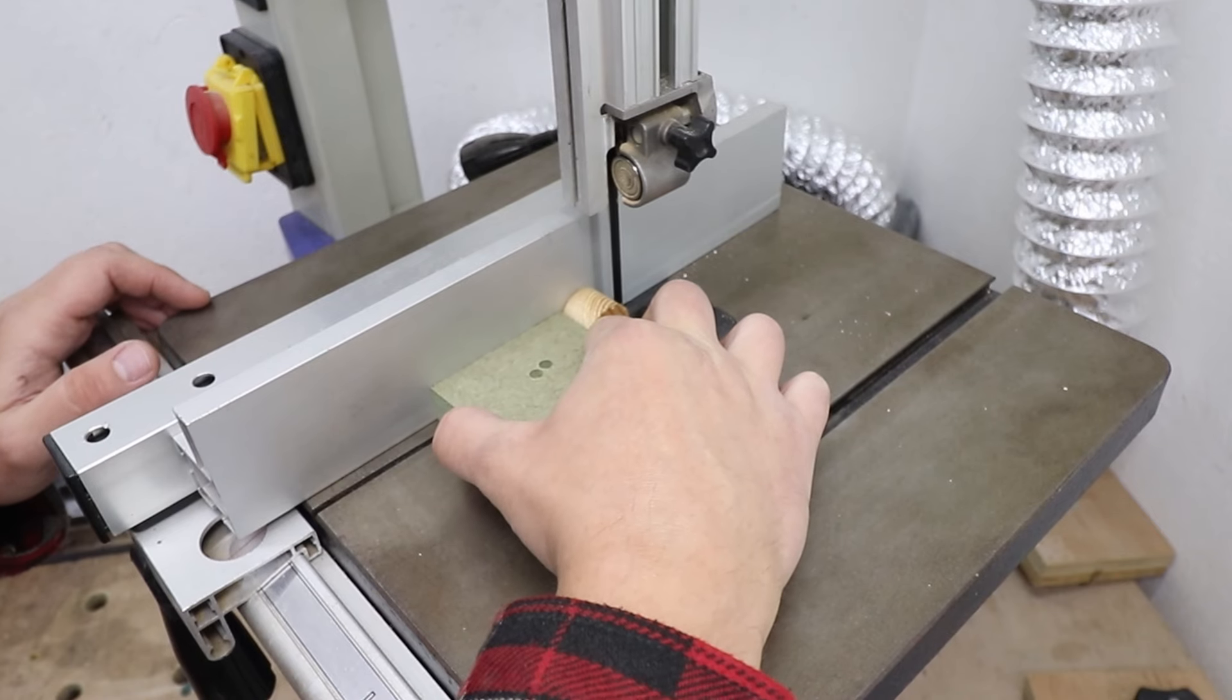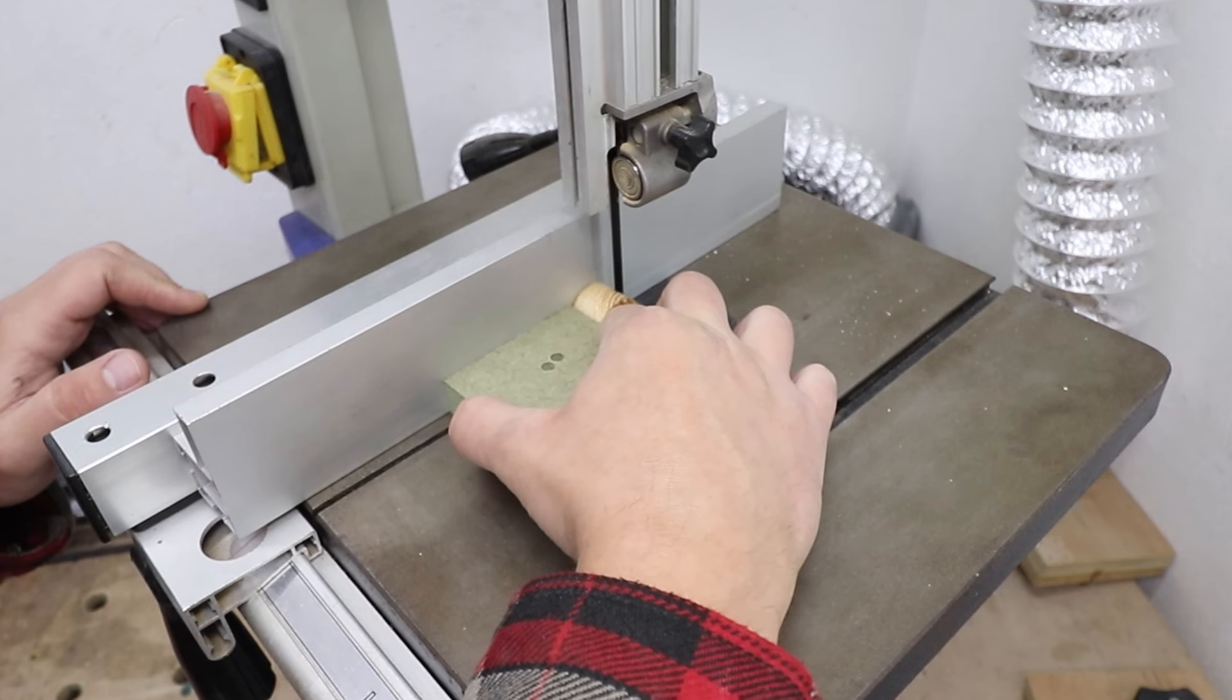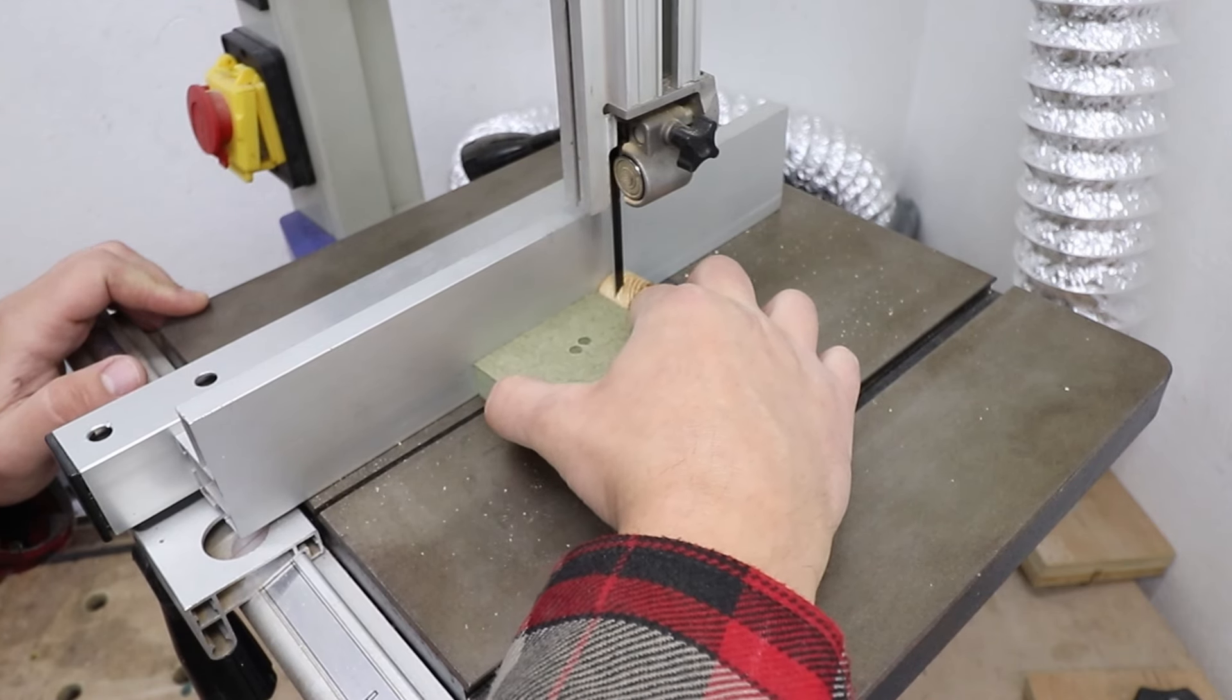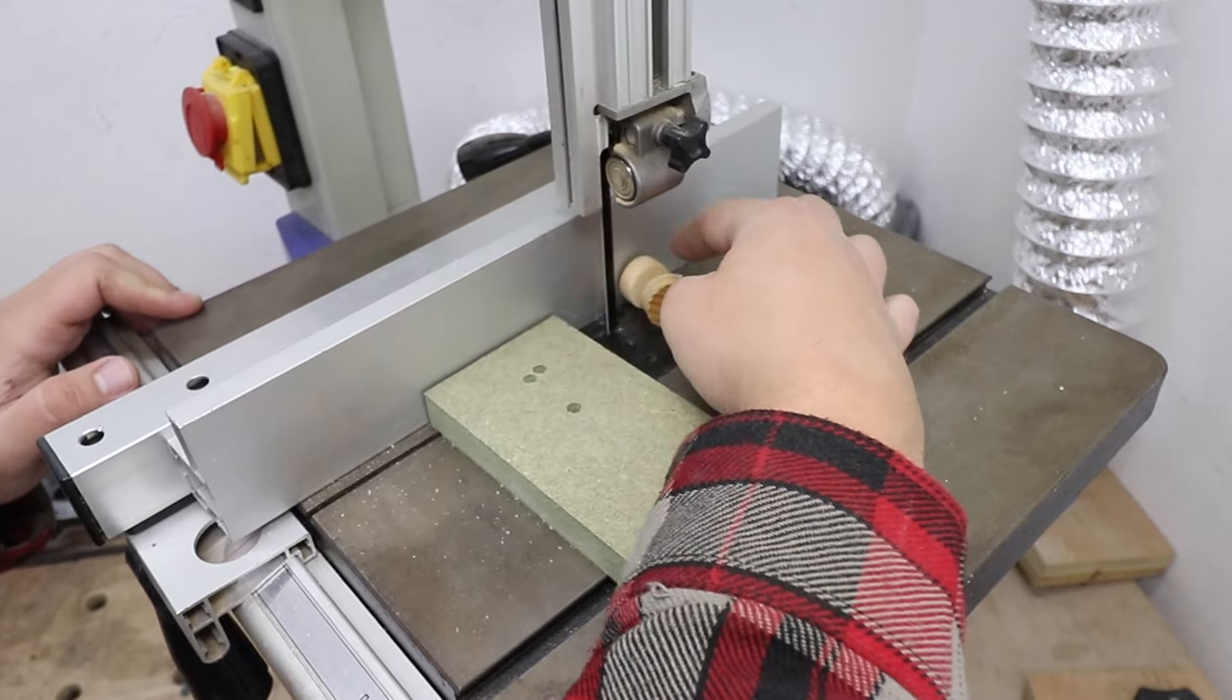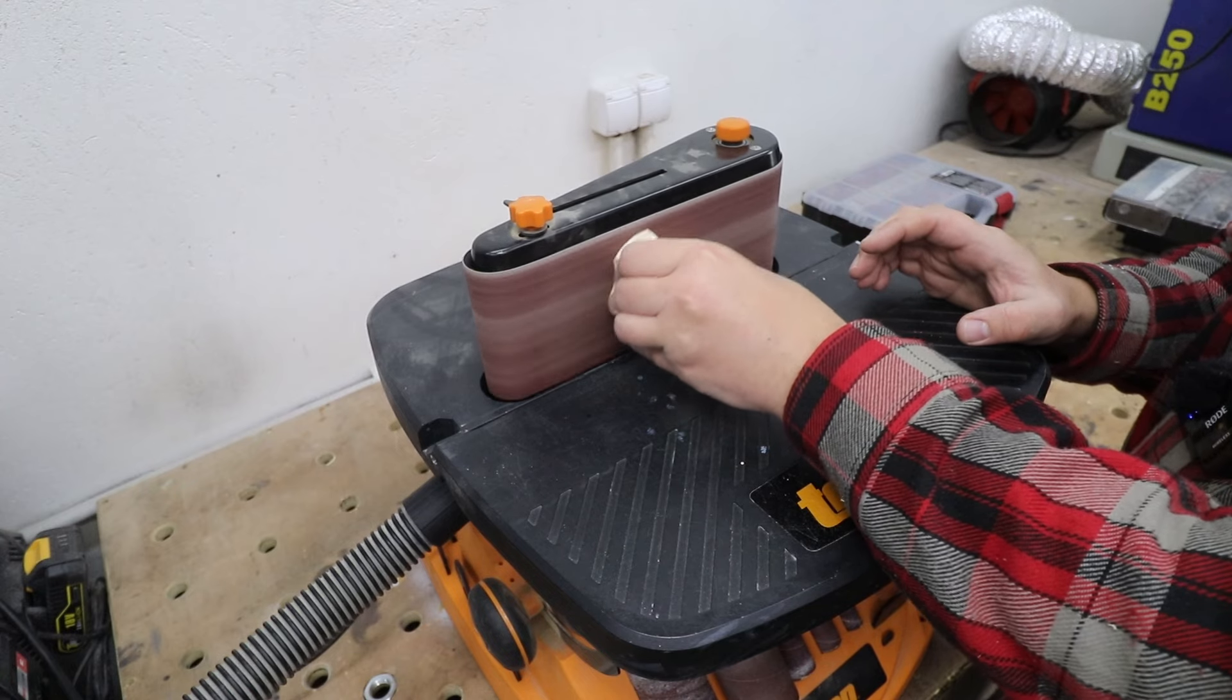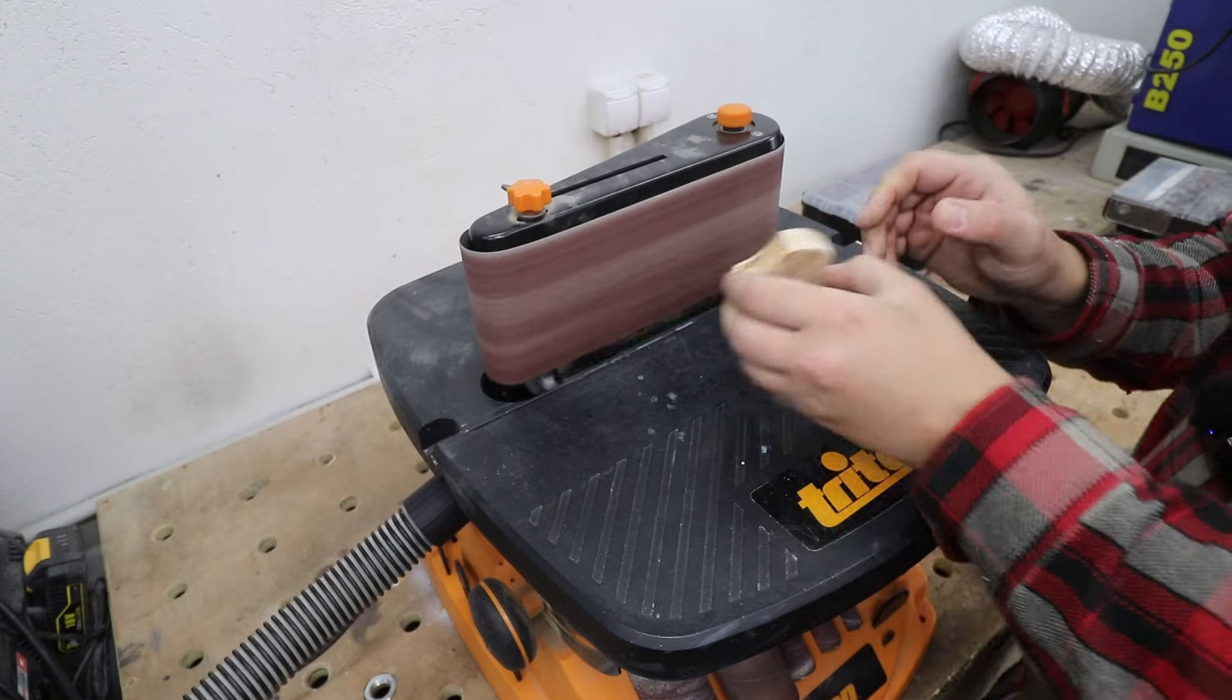Now with my band saw I'm cutting these in half as the material was a little bit too thick for my liking. With my sander I'm just going to clean up all the pieces so they're nice and smooth.